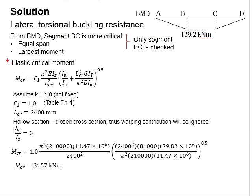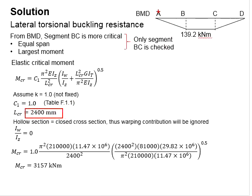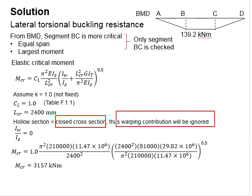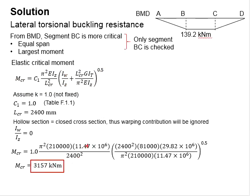Determine the elastic critical moment using the relevant equations for segment BC. Assume K equal to 1. Referring to Table F1.1, when the moment is uniform throughout and K equals 1, C1 equals 1. The critical length is 1.0 times the span, which is 2400 mm. Since the member is a hollow section with a closed cross-section, the warping contribution is equal to zero. Substituting the relevant values into the equation, the elastic critical moment is obtained as 3000+ kNm.